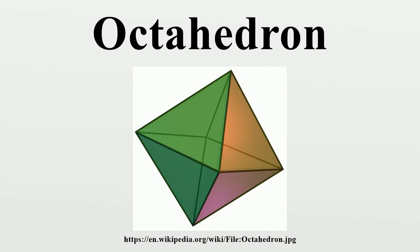The above shapes may also be realized as slices orthogonal to the long diagonal of a tesseract. If this diagonal is oriented vertically with a height of 1, then the first five slices occur at heights R, 3/8, 1/2, 5/8, and S, where R is any number in the range 0 < R < 1/4, and S is any number in the range 3/4 < S < 1.